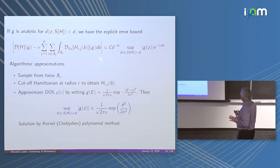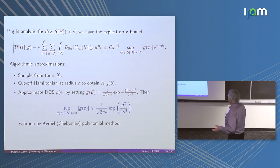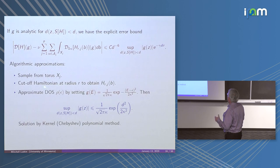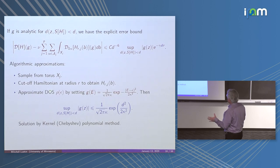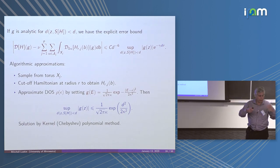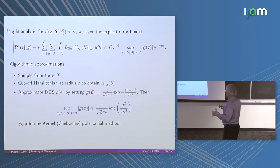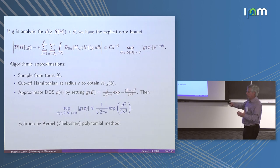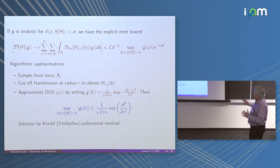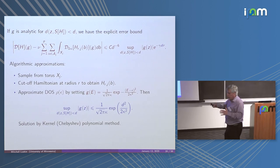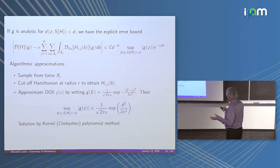Algorithmically, we have to sample from the torus, create these finite Hamiltonians for the shifts with cutoff, determine r, then approximate the delta function. There are various parameters in the numerical approximation. We're mathematicians, so we explicitly get error bounds for all the parameters, and then create an efficient method by optimizing the choice of sampling, radius, and numerical method. In the end, we have a relatively efficient method.